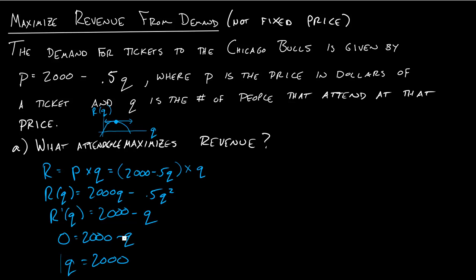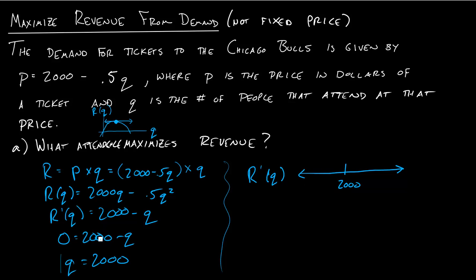We think q equals 2000 is the attendance that maximizes revenue. Before we confirm that, we want to do a first derivative test or a second derivative test — here I'll just do a first derivative test. It tells me that R prime of q around 2000: if I go to the left of 2000, say plug in zero, 2000 minus 0 is positive. If I go to the right, say 10,000, then 2000 minus 10,000 is negative. So this first derivative test tells me I increase up to 2000 and then decrease away from it — 2000 is indeed a maximum, the attendance that maximizes revenue.